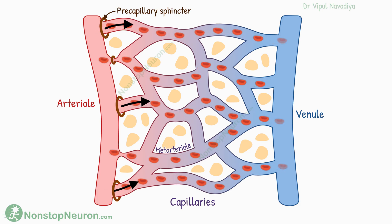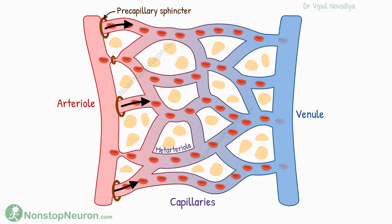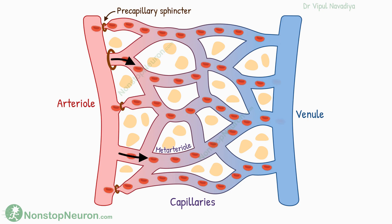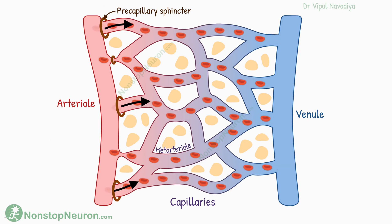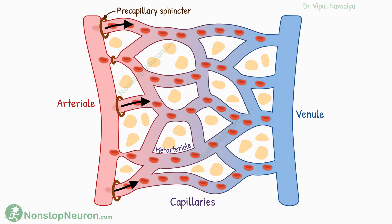In summary, the blood flow through an individual capillary keeps turning on and off due to vasomotion, but the average flow through a tissue remains constant in a given situation. That's it for vasomotion.